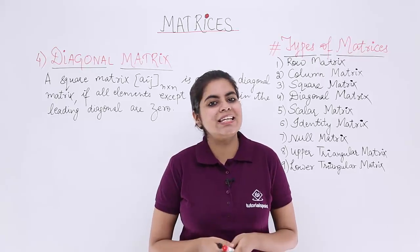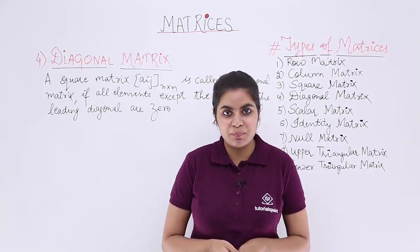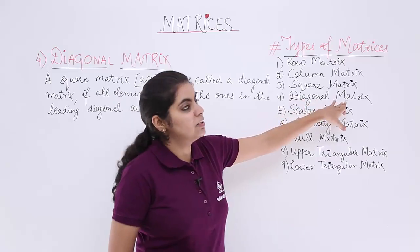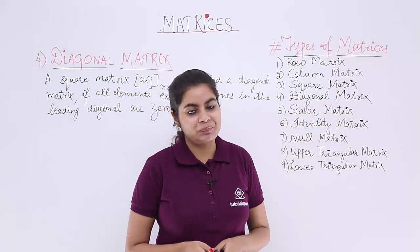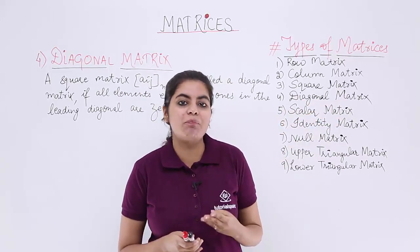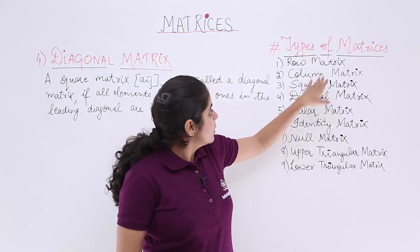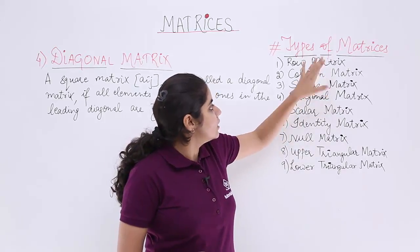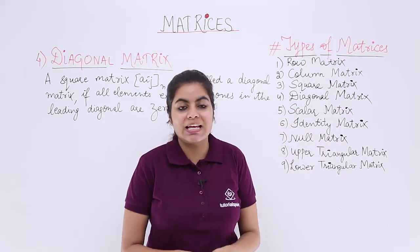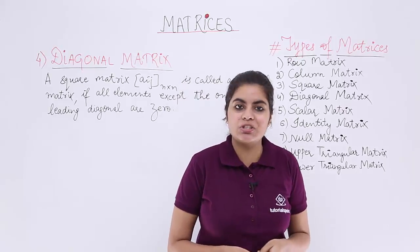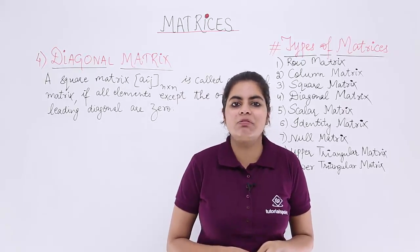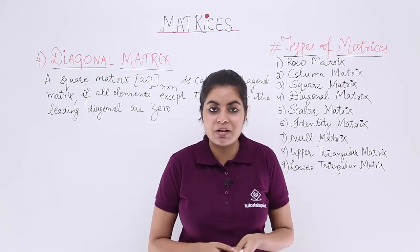In this video, let's see another type of matrix called the diagonal matrix. We have already seen in the previous videos three important types of matrices: the row matrix, the column matrix, and the square matrix. This video is a continuation of the previous ones, and here we are going to study what is known as the diagonal matrix.